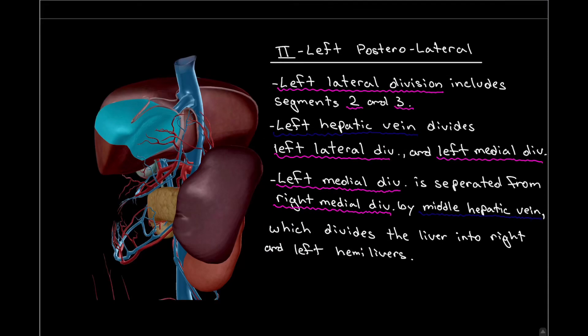We can see here segment number two, the left posterolateral segment. It is part of the left lateral division of the liver, which includes segments number two and three. Both of these segments drain their blood into the left hepatic vein, which is the division between the left lateral division of the liver and the left medial division of the liver.